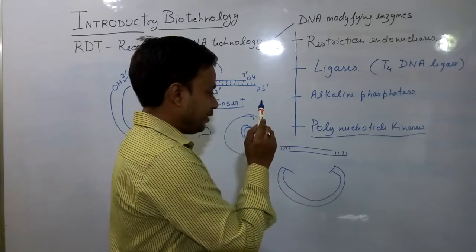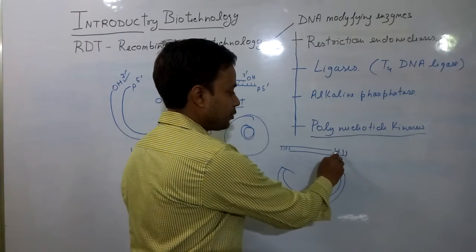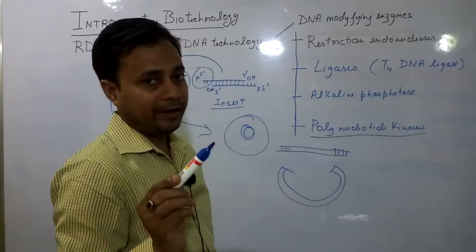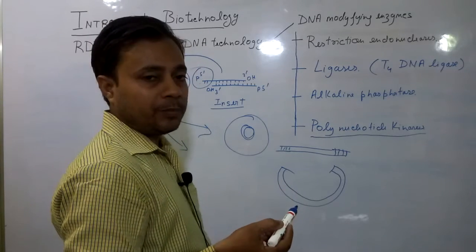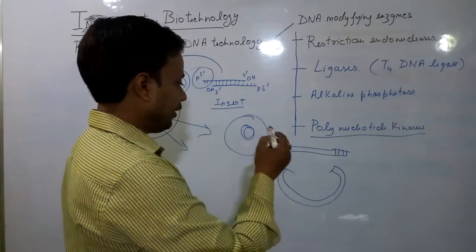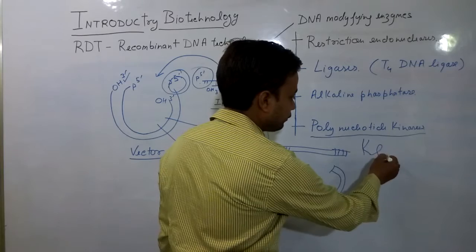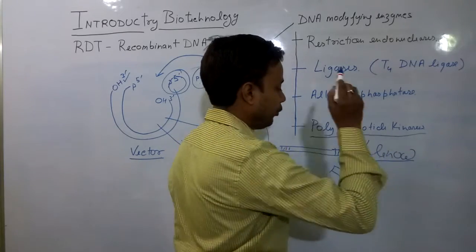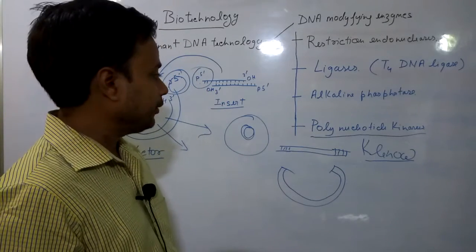For this purpose we utilize polynucleotide kinase, which can successfully introduce phosphate groups at these ends and works as an end-filling enzyme. Other enzymes are also available for this purpose, like the Klenow fragment, which is a part of polymerase and is also used for end-filling.